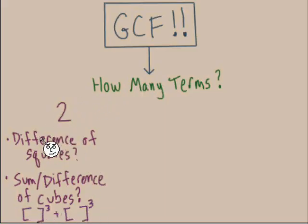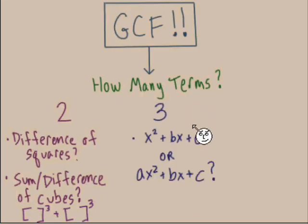If we see three terms, there are two different outcomes there, and it depends on our x² term. Do we have a coefficient or not? If we don't have a coefficient, if our leading term is just x², then that's the type of factoring where we want to find a pair of numbers that multiply together will equal the third term, c, and added together those numbers would equal that middle term, b.